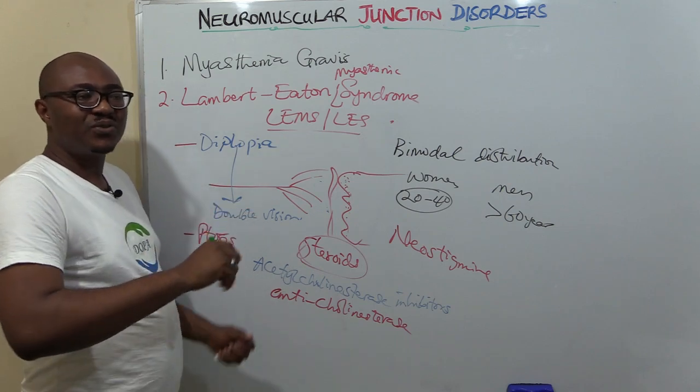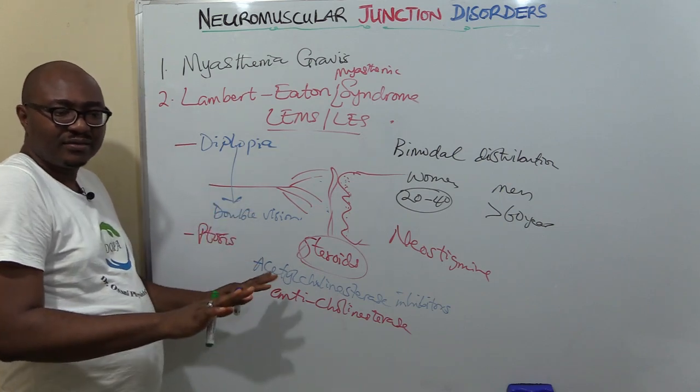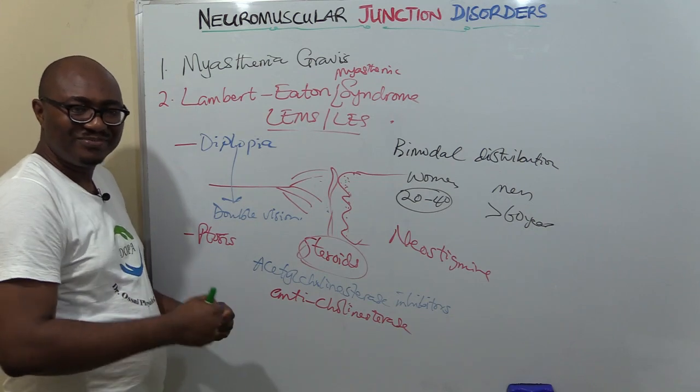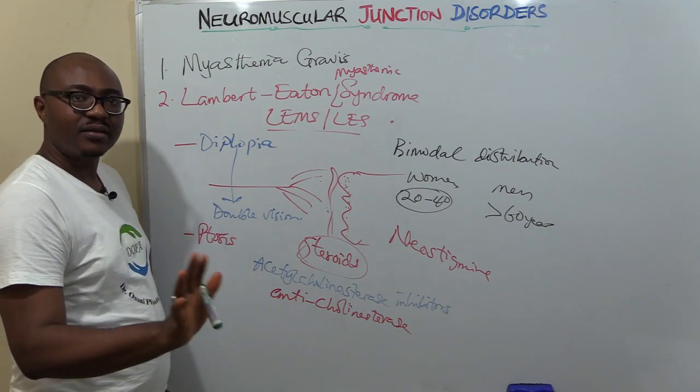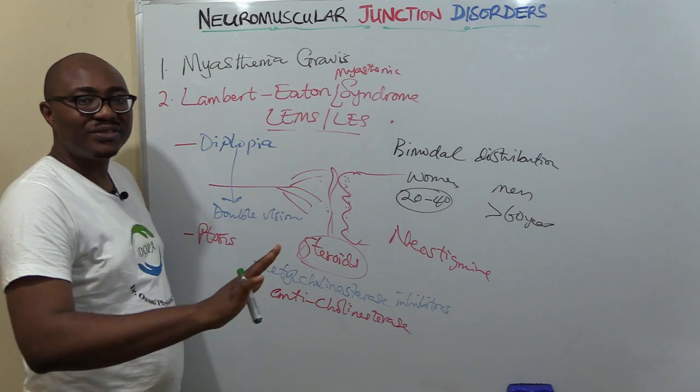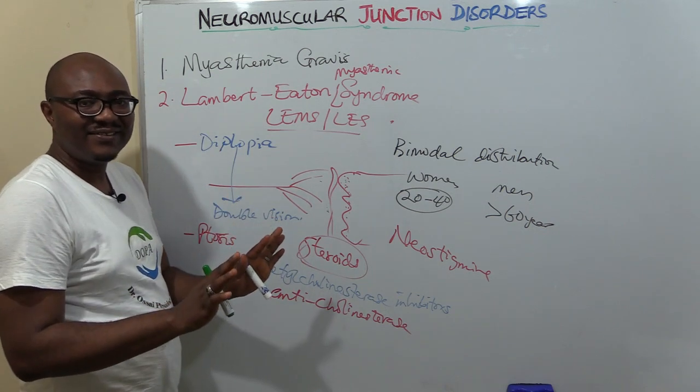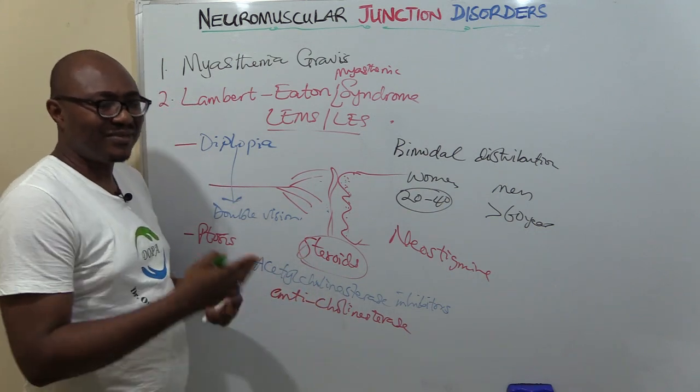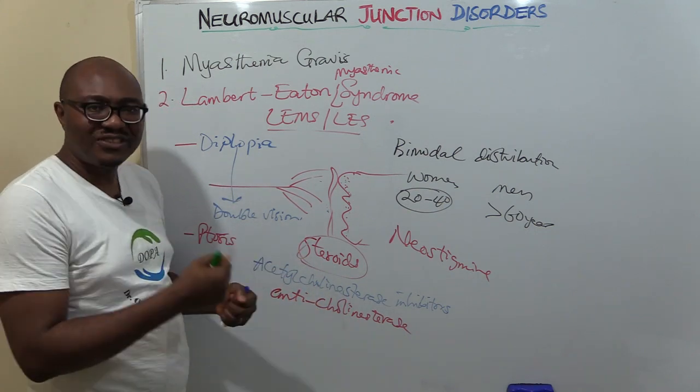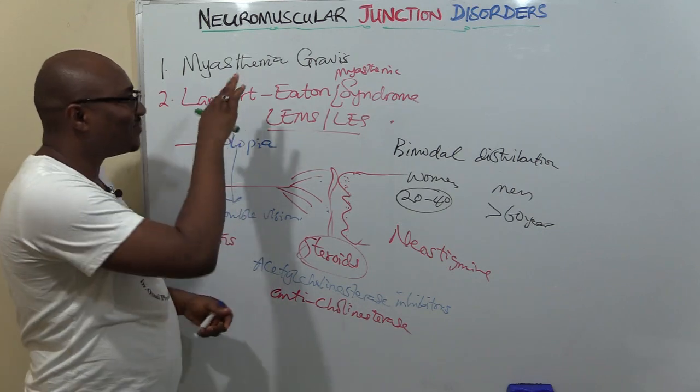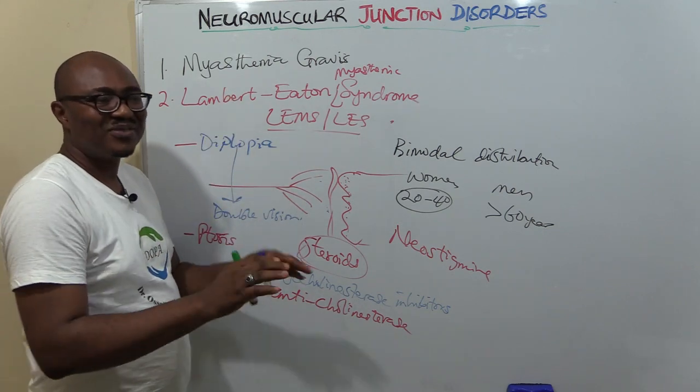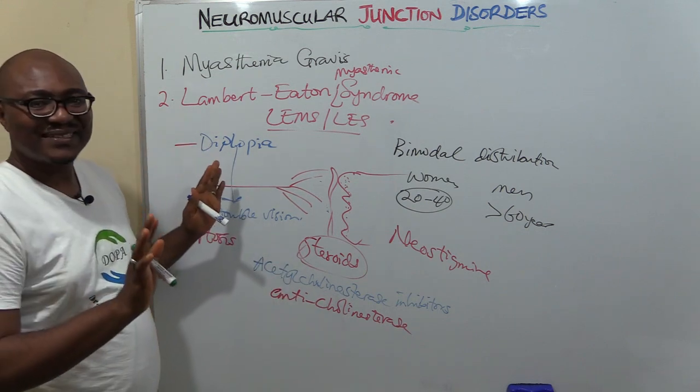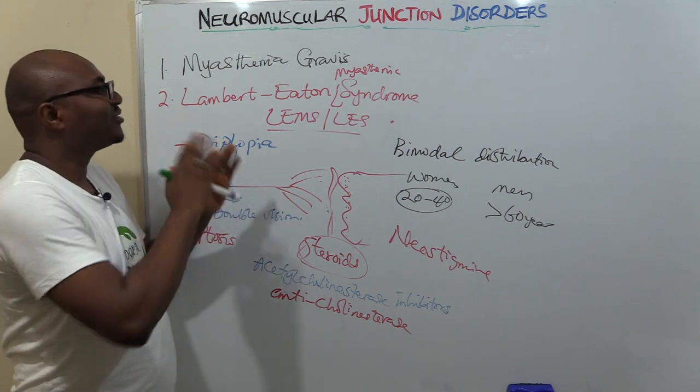This is what happens: while in Myasthenia Gravis there's progressive weakness as you exercise the muscle, in Lambert-Eaton, the weakness starts when at rest. As you keep using the muscle, you begin to gain more strength—just the opposite. In Myasthenia Gravis, as you're using the muscle it becomes progressively weaker. Those are the very important differences.